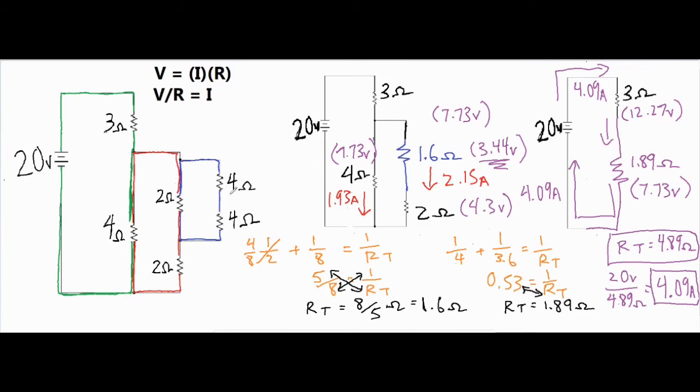So this branch gets 3.44 volts and this branch gets 3.44 volts as well. And we could do the same thing we did before and do V over R, and then we get a current of 1.72 amps through that single 2 ohm resistor. And then if we do V over R over here, it's V 3.44 divided by 8 because there's two 4 ohm resistors, so the current flowing through this section is 0.43 amps.